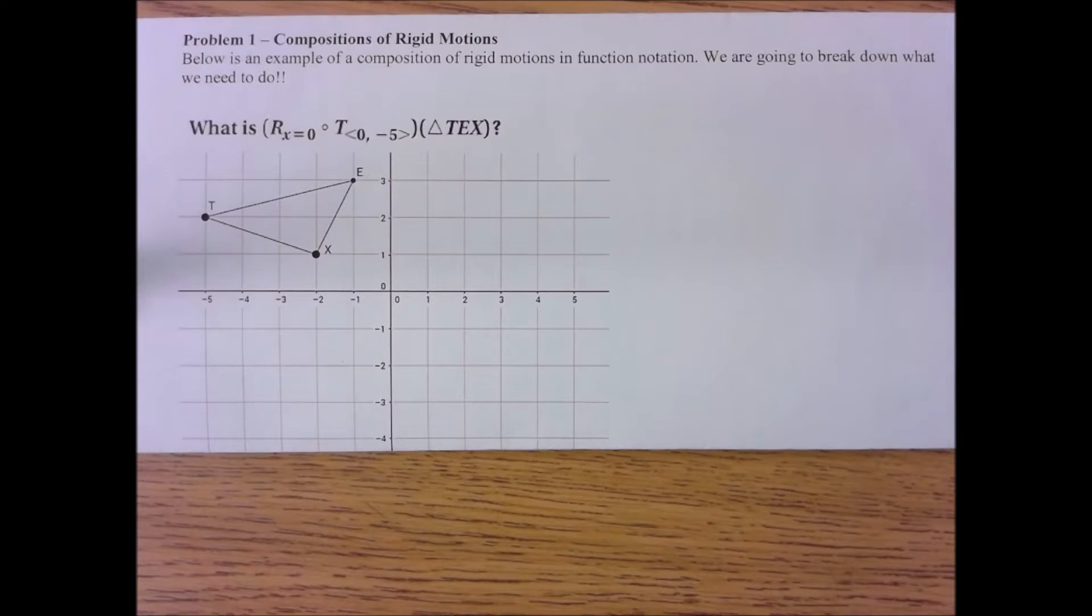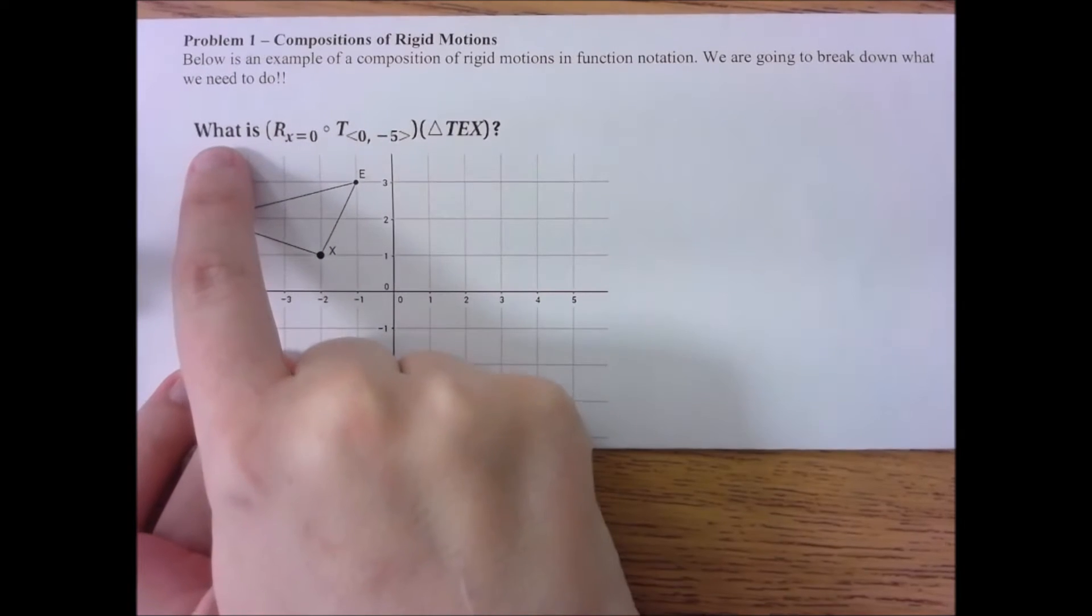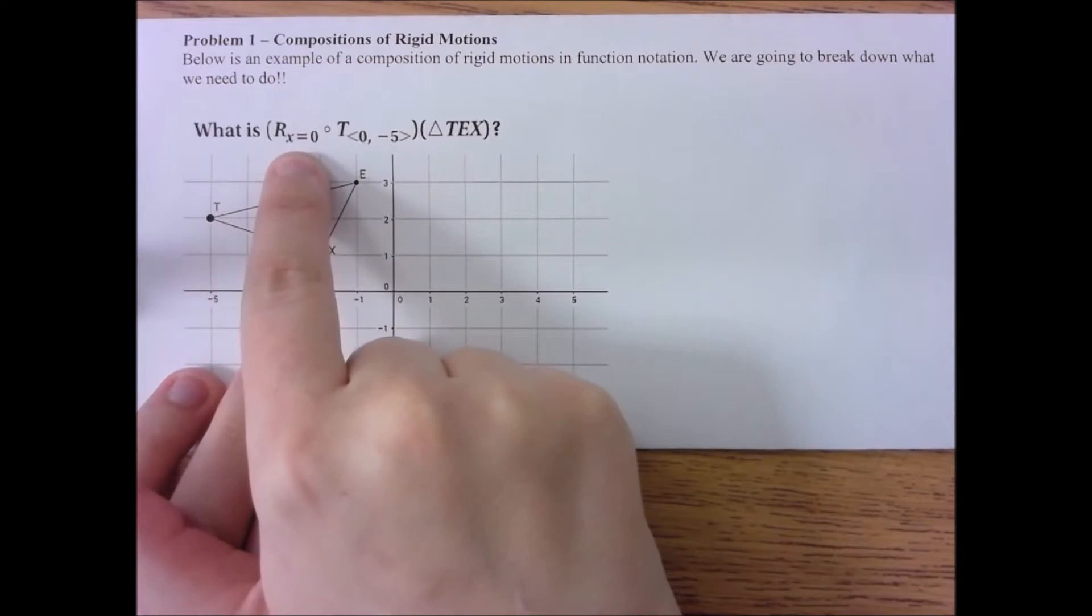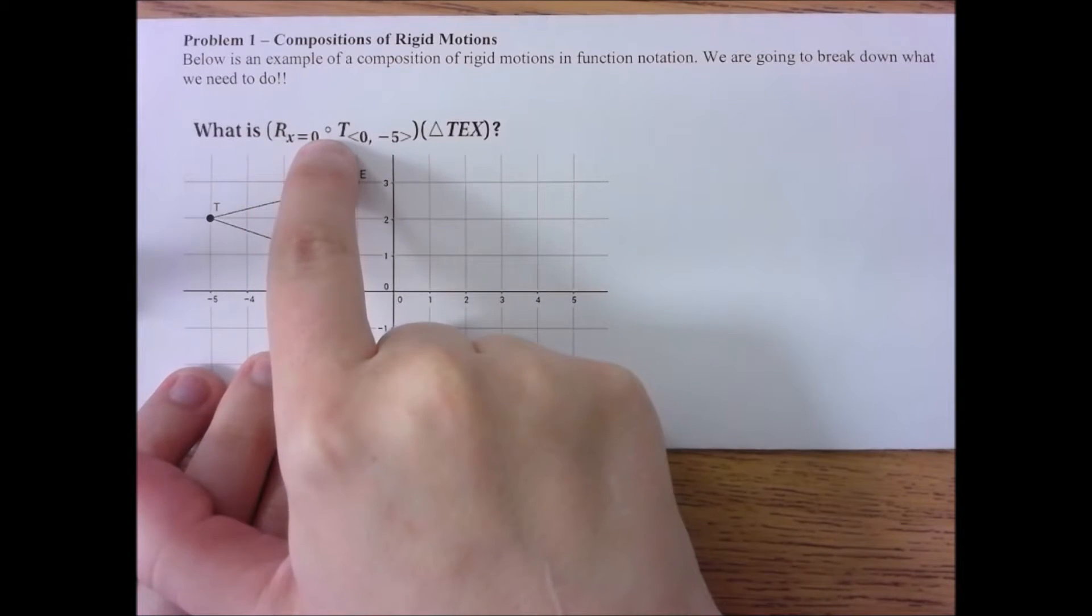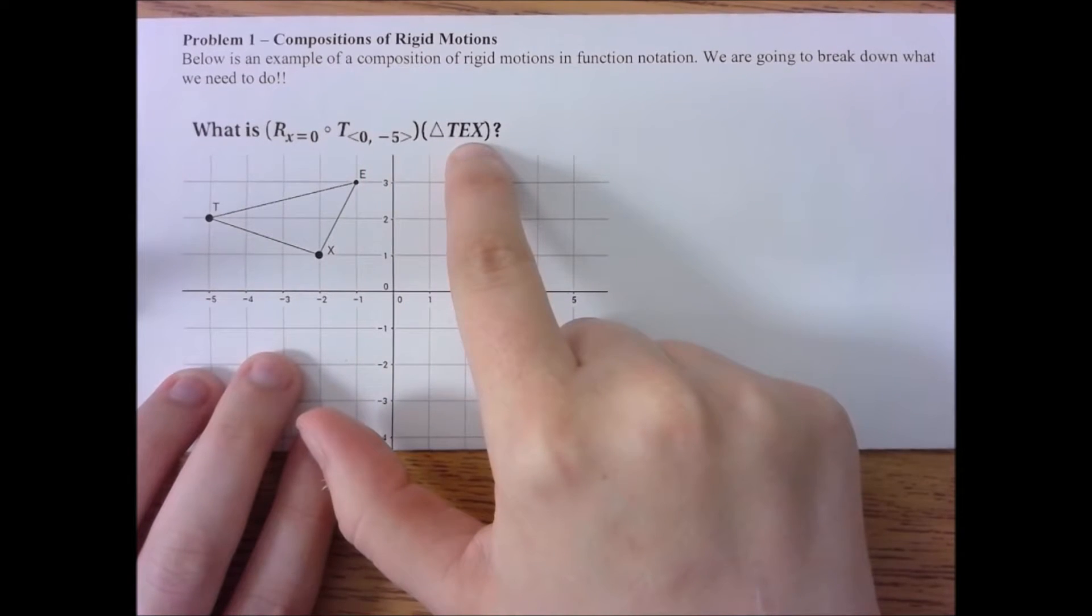Below is an example of a composition of rigid motions in function notation. We are going to break down what we need to do. So the question is, and I'm going to point to it as I'm saying it, what is reflection over the y-axis after a translation five units down of triangle TEX, or TEX, if you will.